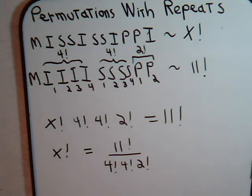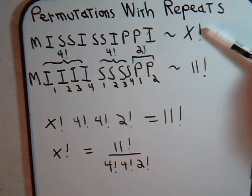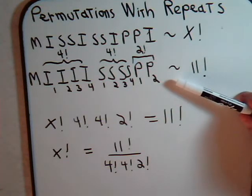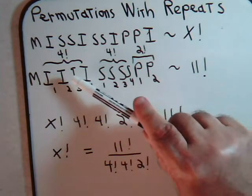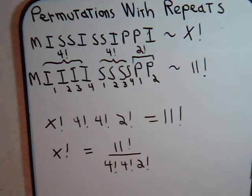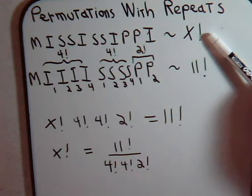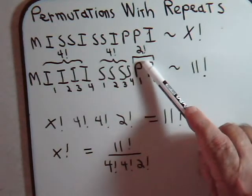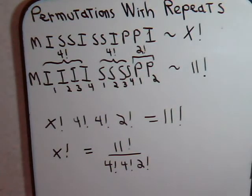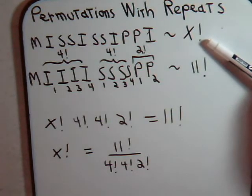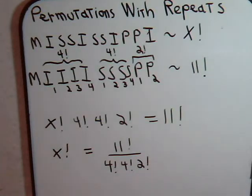Solving for x factorial: we have repeats, so it's not going to be eleven factorial arrangements — it's x factorial. When we artificially made the letters distinct, we added four factorial, another four factorial, and a two factorial that didn't exist before. So x factorial times those repeat factorials equals eleven factorial, which means x factorial equals eleven factorial divided by four factorial times four factorial times two factorial.